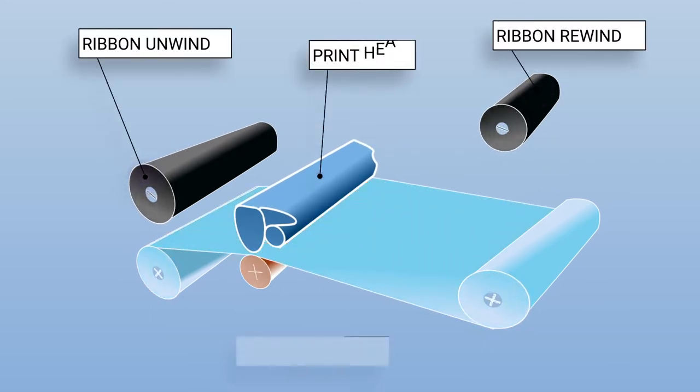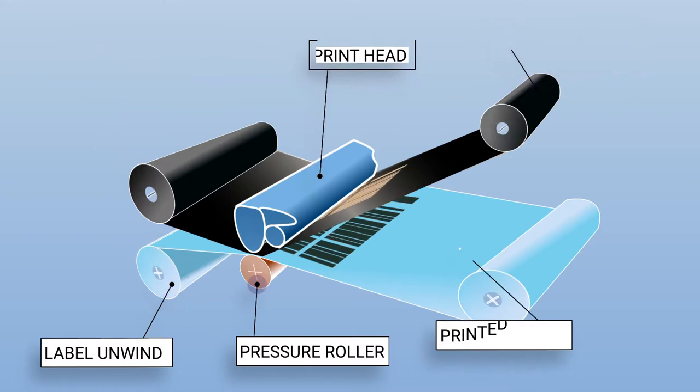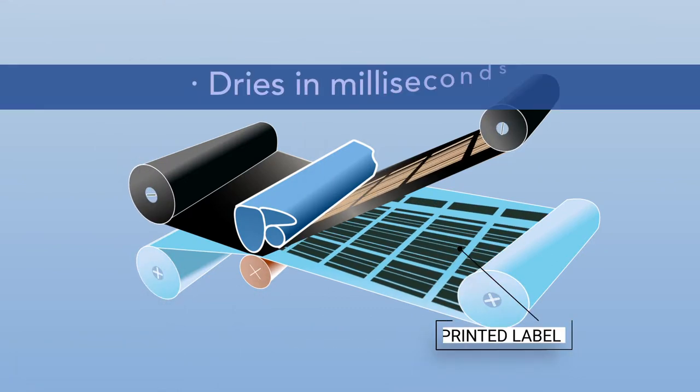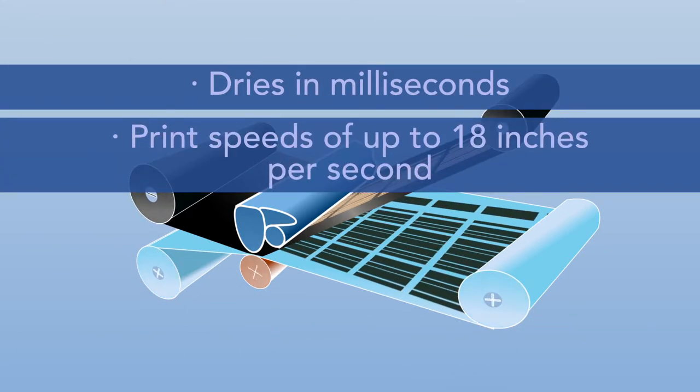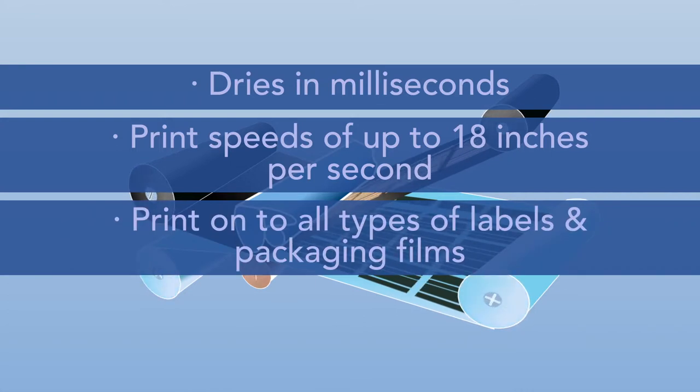The ink melts from the ribbon and is transferred onto the label or packaging film and dries within milliseconds. Thermal transfer ribbons can print on all types of labels and packaging films.